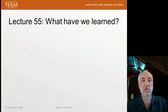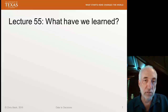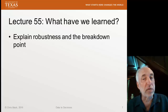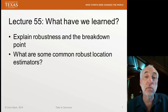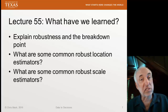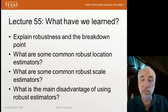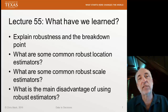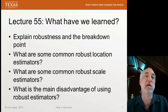All right, what have we learned in Lecture 55? You should be able to quickly and easily answer these questions — if not, please go back and review the material. Explain robustness and the breakdown point. What are some common robust location estimators? What are some common robust scale estimators? And finally, what is the main disadvantage of using robust estimators? In our next lecture, we're going to extend the concept of robust estimation to include robust estimation of model parameters — in other words, robust regression. Till then.